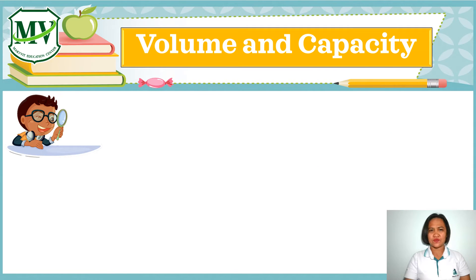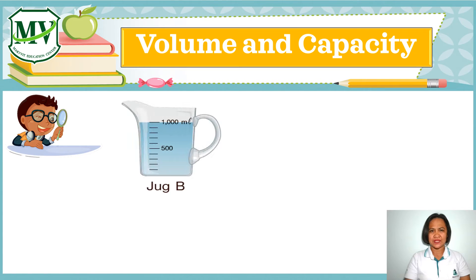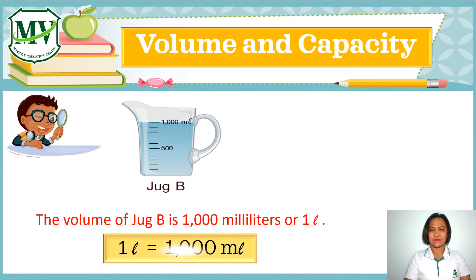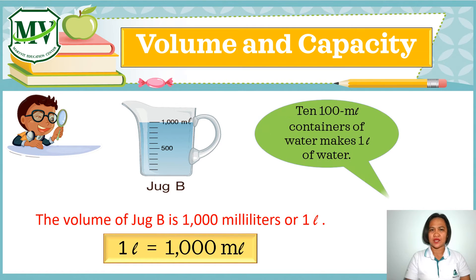The volume of the water in Jug B is 1,000 milliliters, or 1 liter. 1 liter is equal to 1,000 milliliters. Therefore, 10 containers of 100 ml makes 1 liter of water.